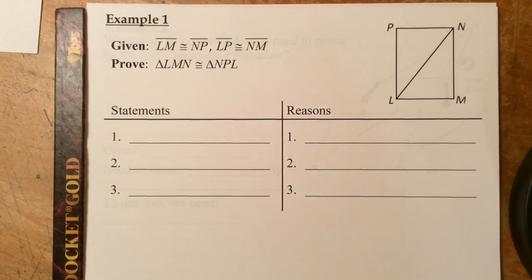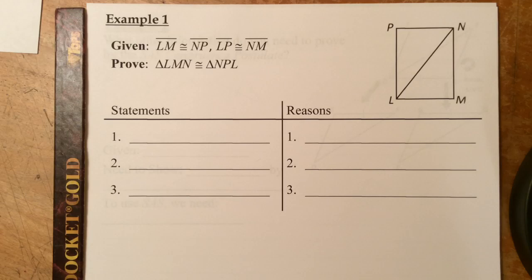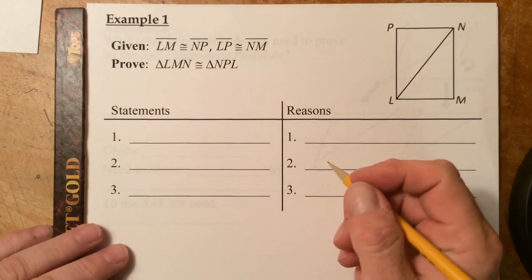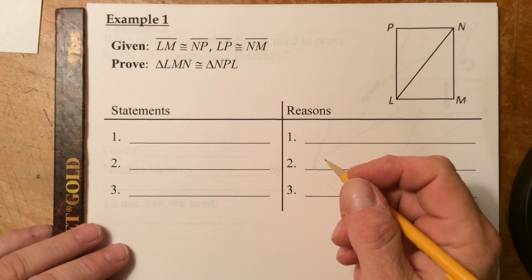These are examples for section 4-2, SSS and SAS congruence. We don't need all six parts of two triangles to prove that the two triangles are congruent if we have two different kinds of tools. Certain combinations and patterns of corresponding sides and angles can be used to prove congruence — specifically the side-side-side postulate and the side-angle-side postulate. In this video, you will use these postulates instead of having to use the definition of congruent triangles each time.